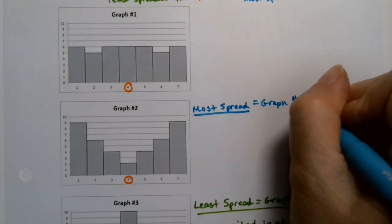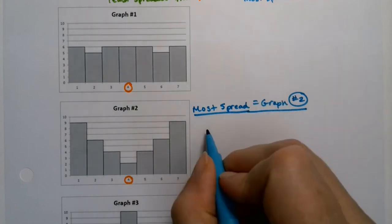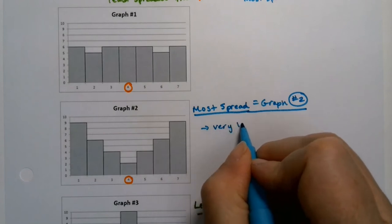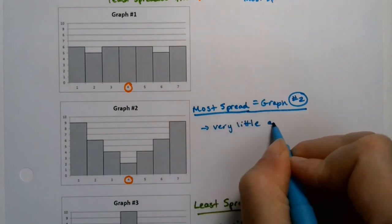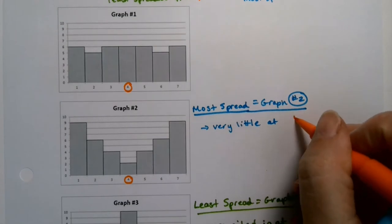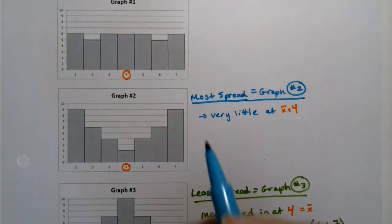Remember what you're measuring with standard deviation. You're measuring distance from the middle, right? So this has very little at four, right? The mean, which was four.